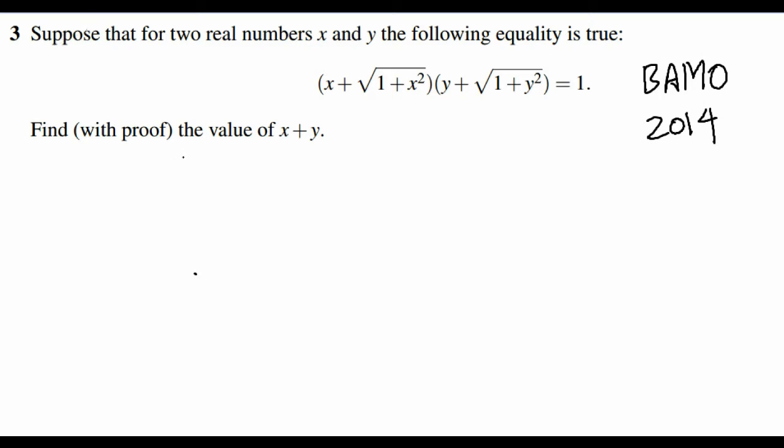So this just basically requires some algebraic manipulation. To start out, let's divide both sides of the equation by y plus square root 1 plus y squared. So x plus square root 1 plus x squared equals 1 over y plus square root 1 plus y squared.